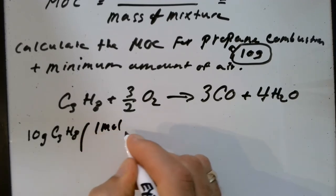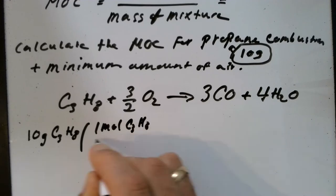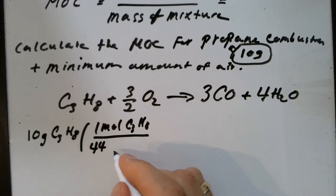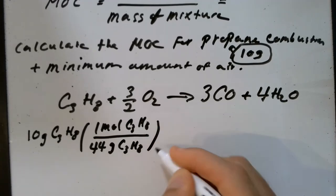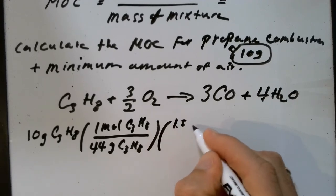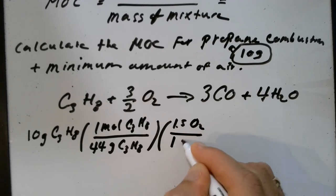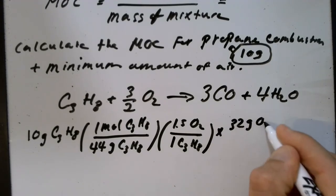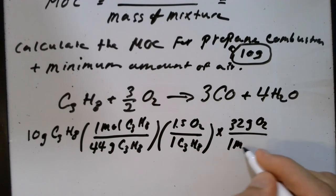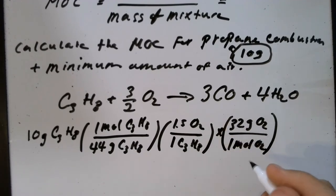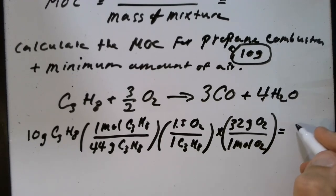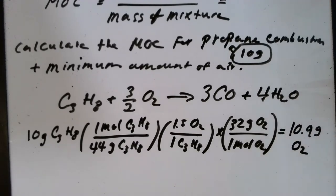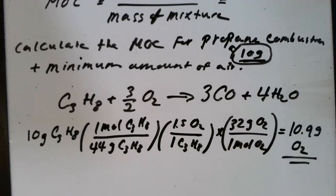The molecular weight for propane is about 44 grams per mole. From the stoichiometry, I have 1.5 moles of O₂ for every 1 mole of propane. Oxygen is 32 grams per mole. Everything cancels except for grams of oxygen, and I get 10.9 grams of O₂. So that is the minimum amount of oxygen required to burn 10 grams of propane.